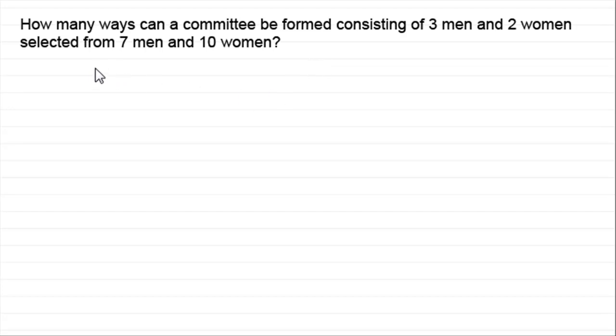So in this first one, we've got how many ways can a committee be formed consisting of three men and two women, selected from seven men and ten women. Now whenever I do a problem like this, I always like to put some dashes down just for me to be able to visualize what's going on. We've got a committee of five people: three men (first man, second man, third man) and two women (woman one, woman two).